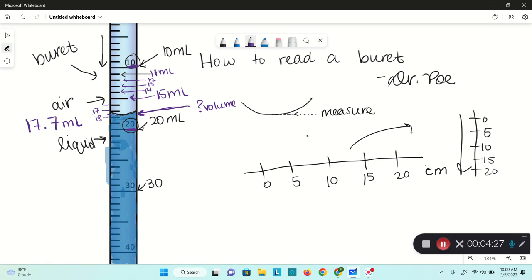To sum it all up, what are our steps to read a burette? Number one, we're going to look at the numbers provided, the numbers and lines provided on the burette.